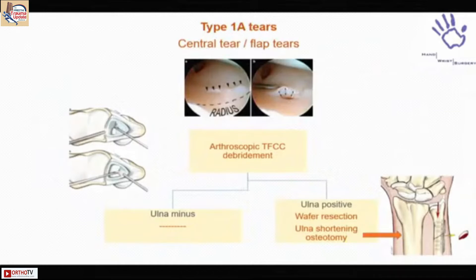A type 1A tear is a central perforation post-traumatic. Central perforations are usually treated by debridement, and in a degenerative tear you may add a wafer resection or ulnar shortening to take care of positive ulnar variance.